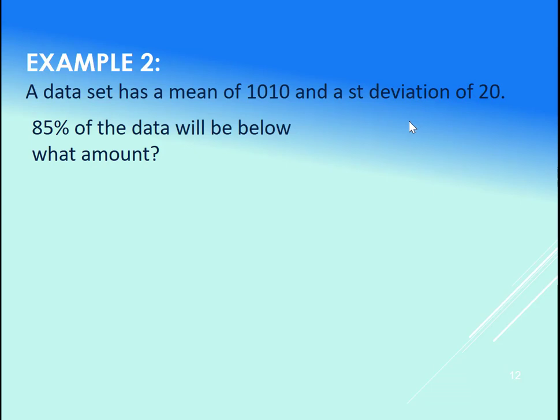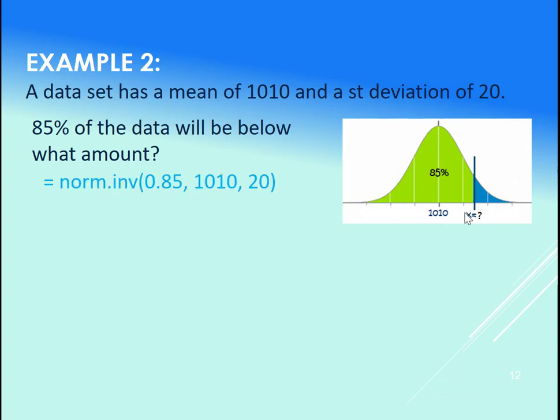So let's jump into an example here, example number 2. We have a mean of 1010 and a standard deviation of 20. 85% of the data will be below what amount. So here's our 85%, we want that x value. Use the NORM.INV, put in the 0.85 for our area here, 1010, and 20. We don't do the comma 1 for cumulative when we're doing NORM.INV. It's assuming we're working with the cumulative density function, and wanting the area to be that 85%. When we plug that into Excel, we get 1030.